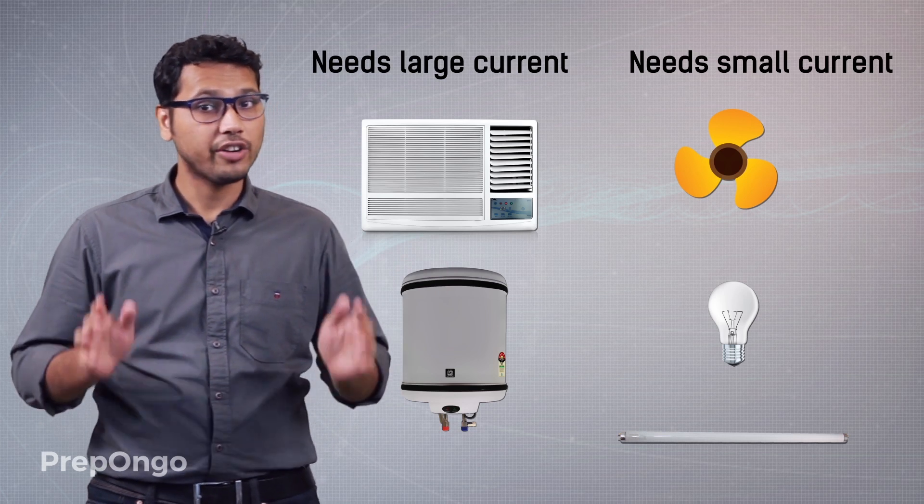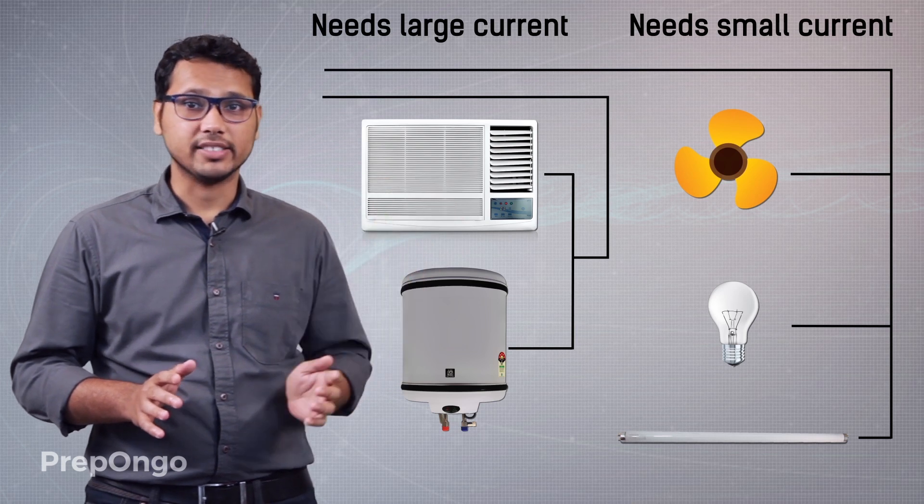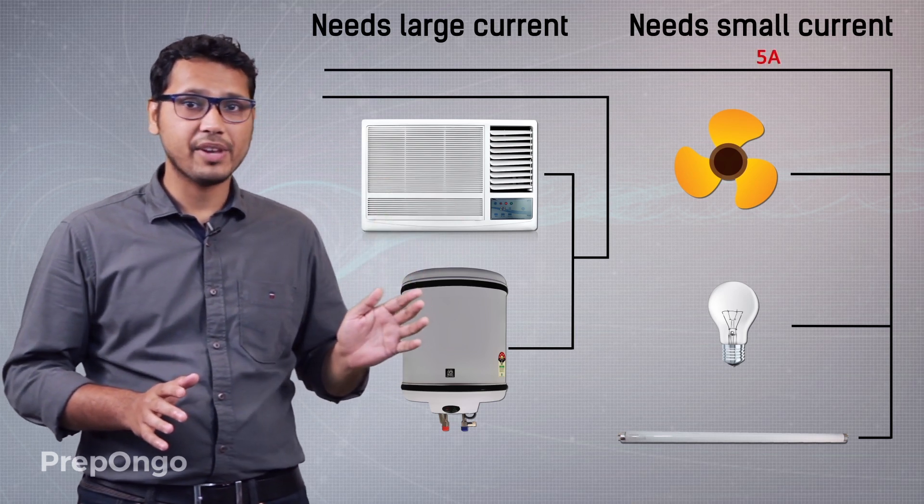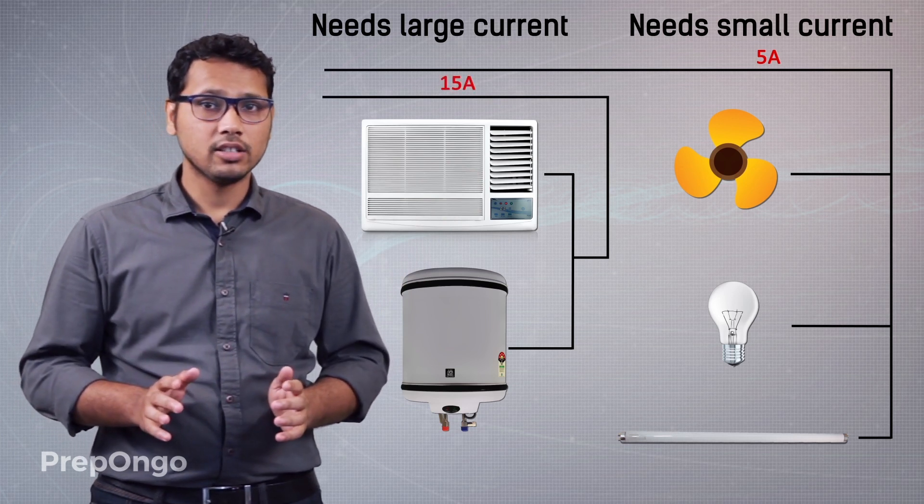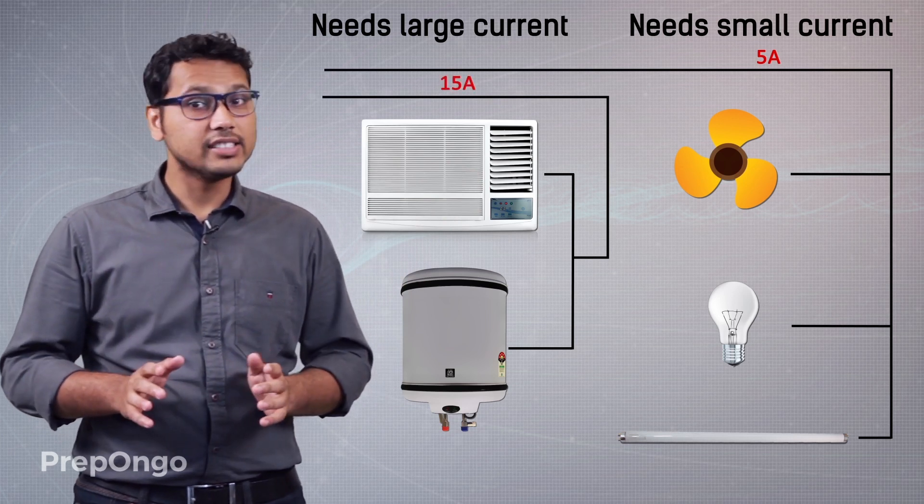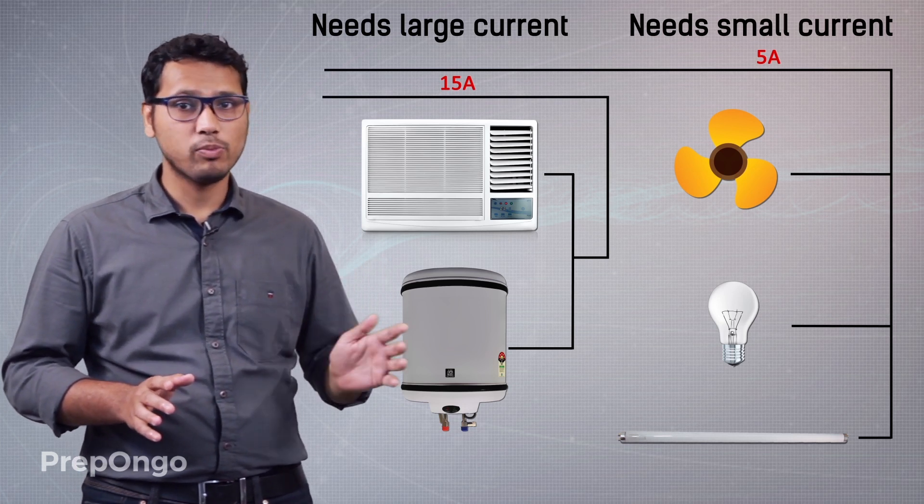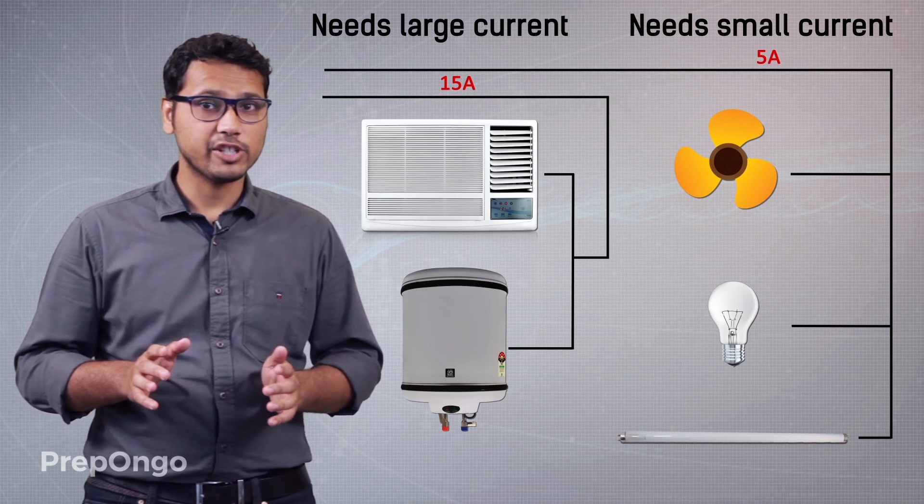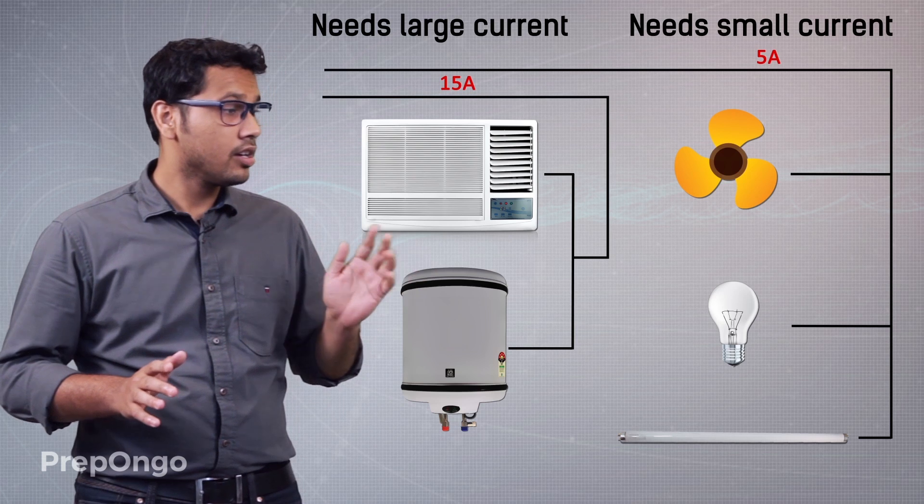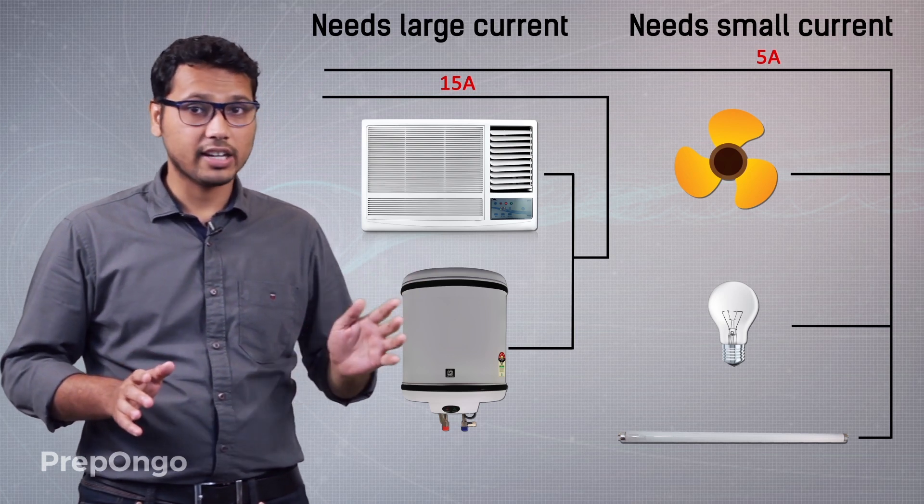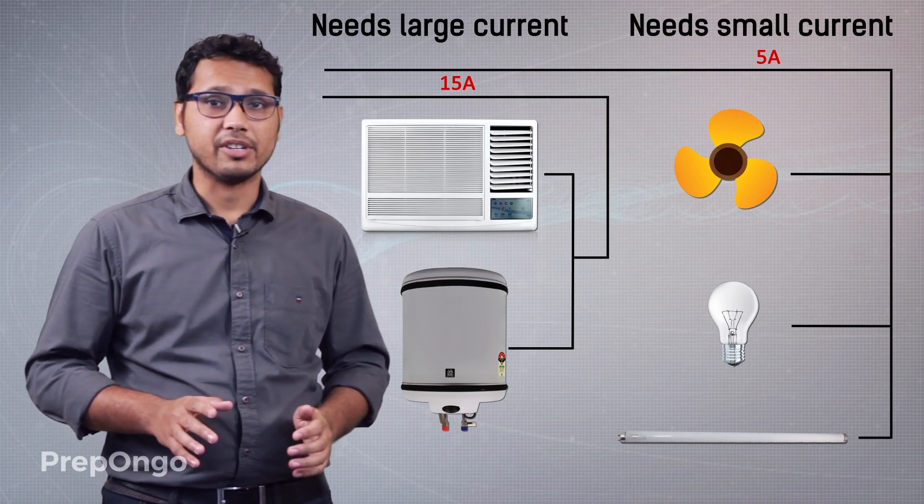So we have two different types of lines coming from the meter to the appliances. One is the 5 ampere line, next is the 15 ampere line. The 5 ampere line is used to connect the fan, bulb or tube light - appliances which need small amount of current. But for appliances which need large amount of current like air conditioner or geyser, these are connected to the 15 ampere line.